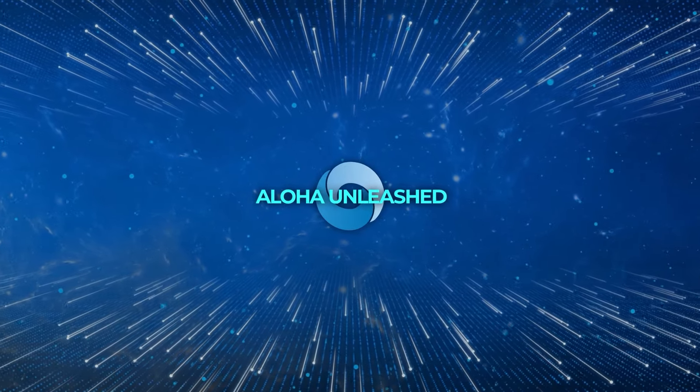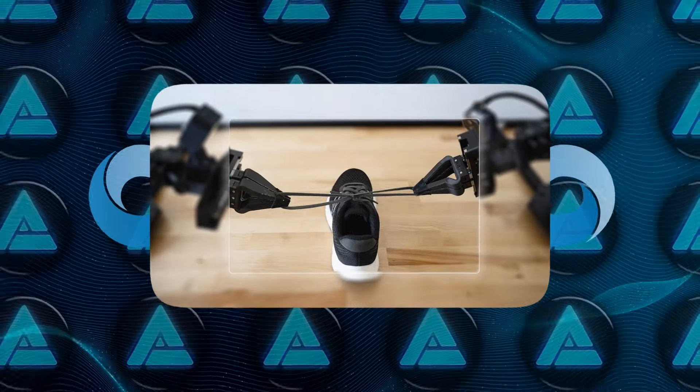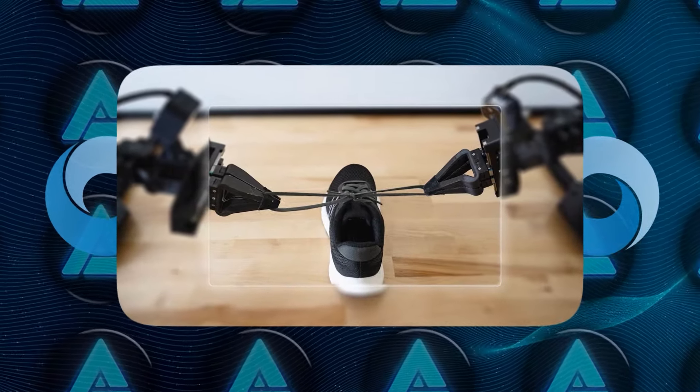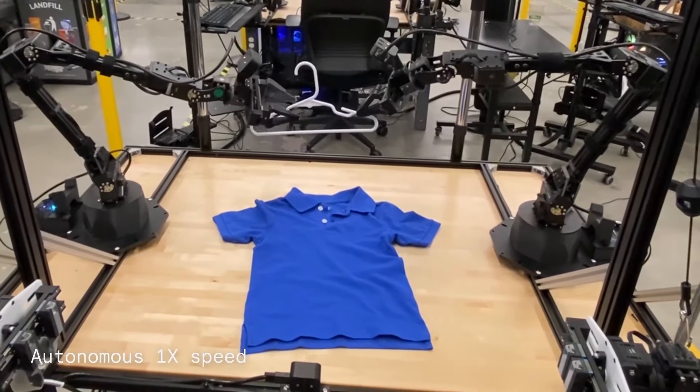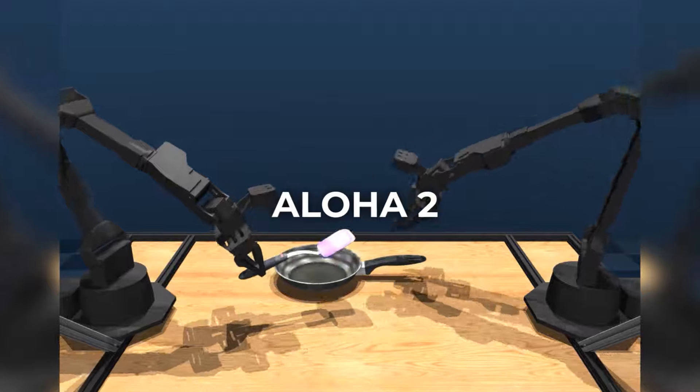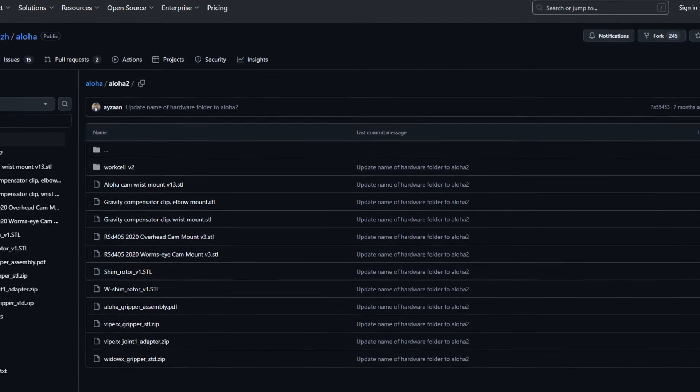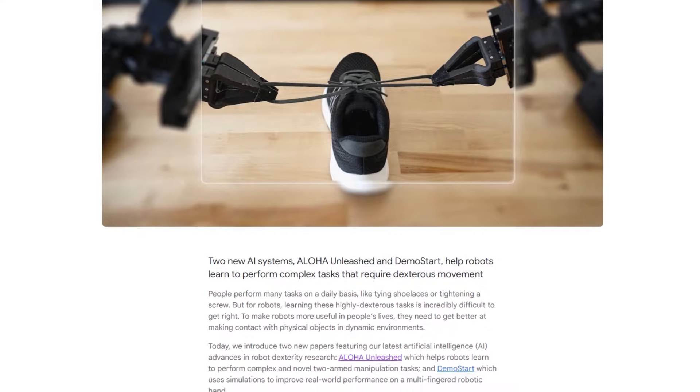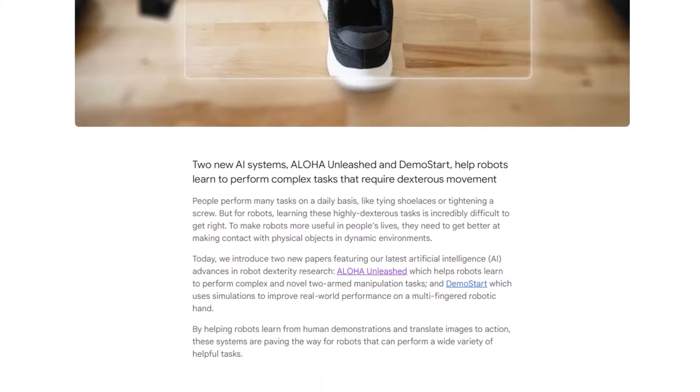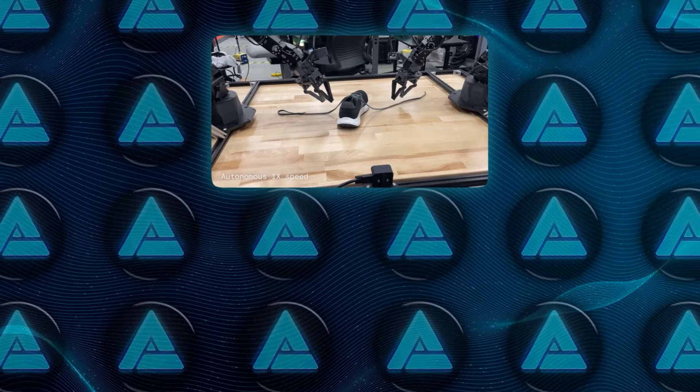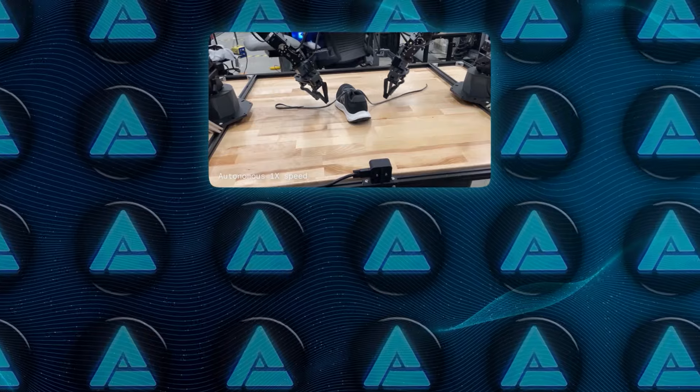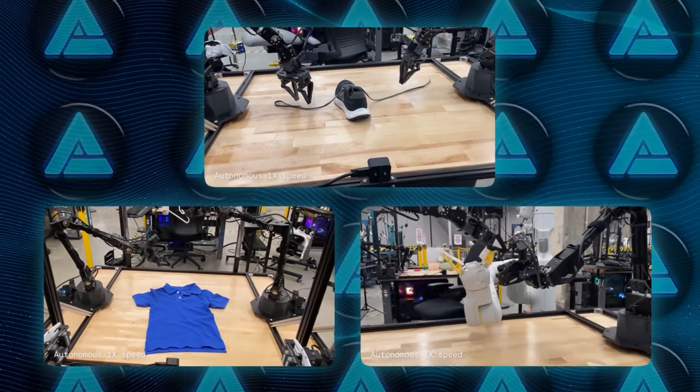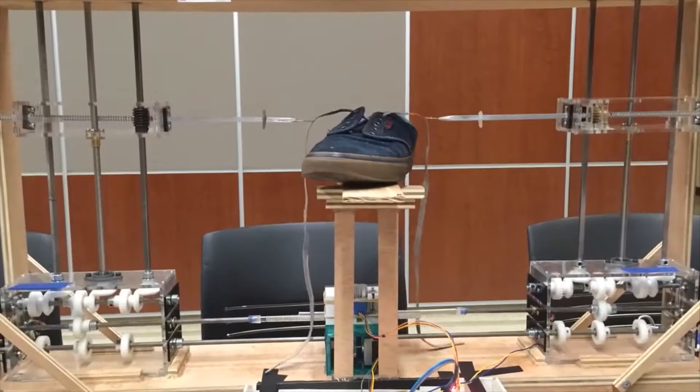Let's start with Aloha Unleashed, which takes robot dexterity to a whole new level, particularly when it comes to bimanual manipulation, using both arms together. This system is built on the Aloha 2 platform, an open-source hardware system developed initially for simpler teleoperation tasks. But Aloha Unleashed has taken this to a much more advanced stage, enabling robots to perform intricate tasks like tying shoelaces, hanging clothes, and even making fine-tuned repairs on other robots.